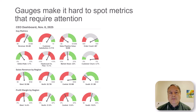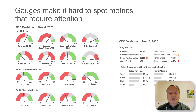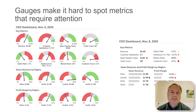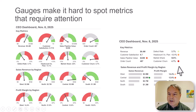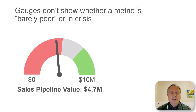Gauges also make it hard to spot metrics that require attention. Quick — what requires attention here? What do I need to focus on? Lots going on. Obviously with action dots that's much simpler — I immediately know where to focus. A lot of these don't require attention, but I'm probably going to want to pay attention to this one first, then once that's under control focus here, then here. Much quicker.